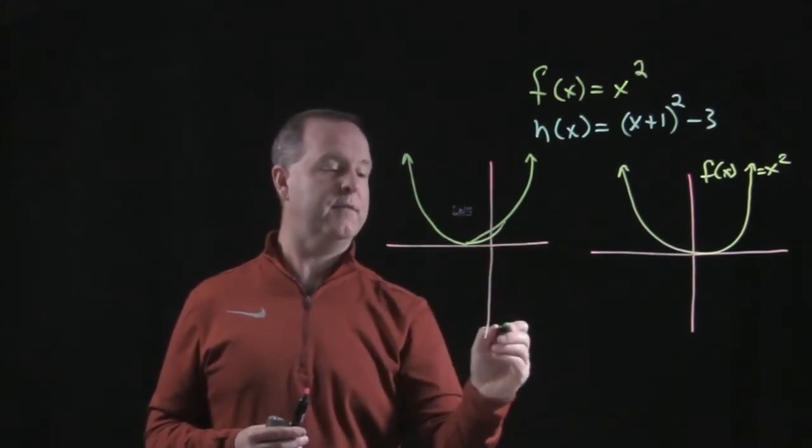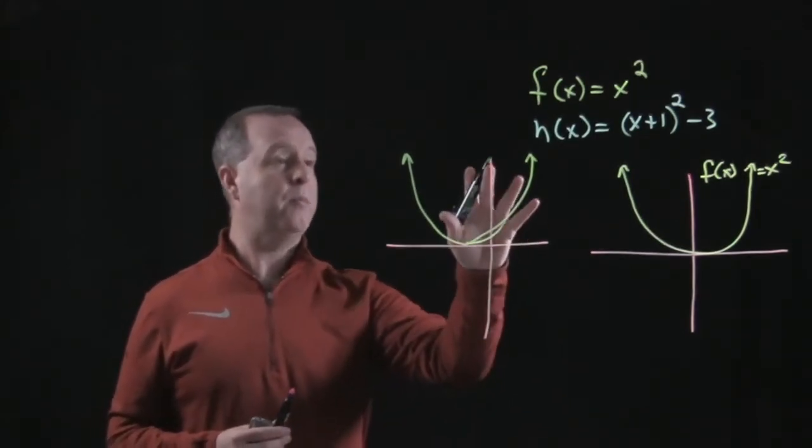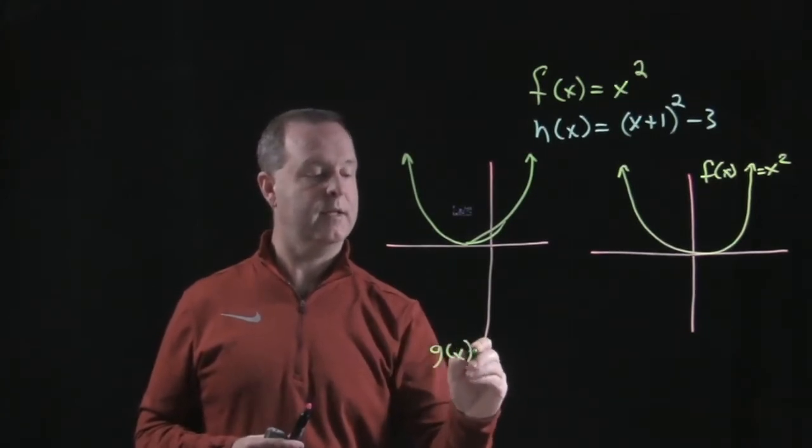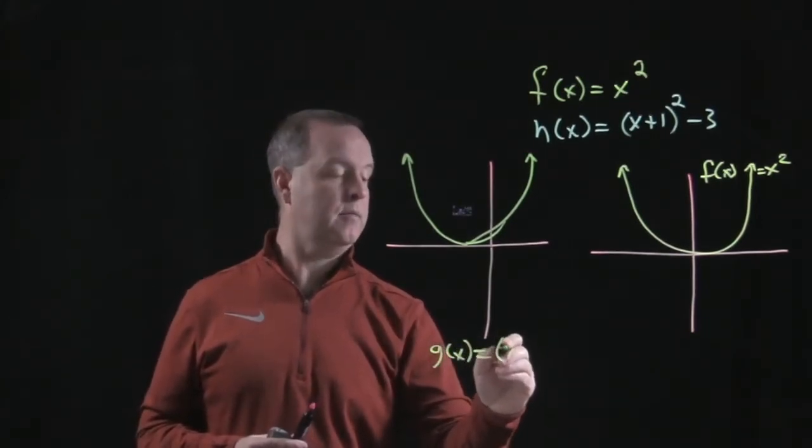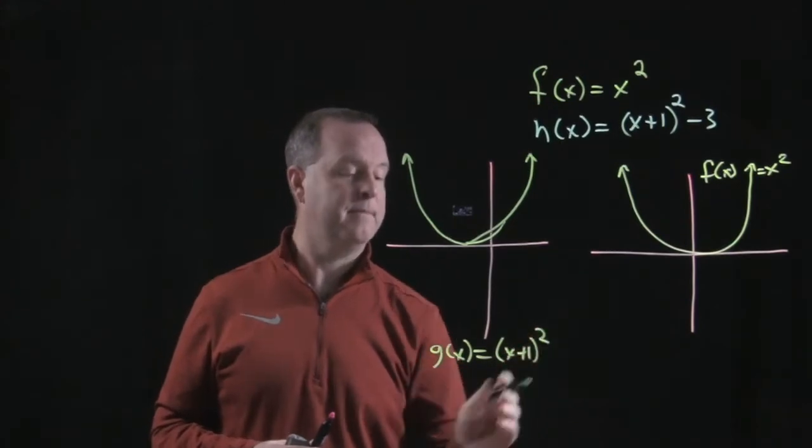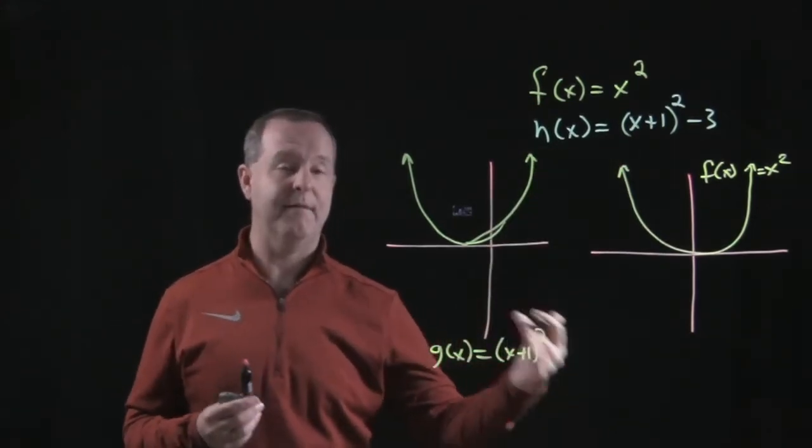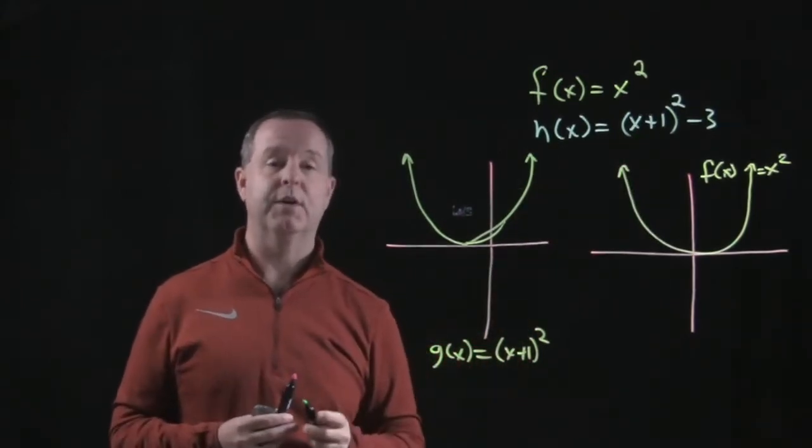So notice that the entire graph was shifted to the left, which basically becomes, this was just maybe some other function, g(x) = (x+1)². So I just did that in-between move. I shifted the graph to the left, based on what I observed from there.